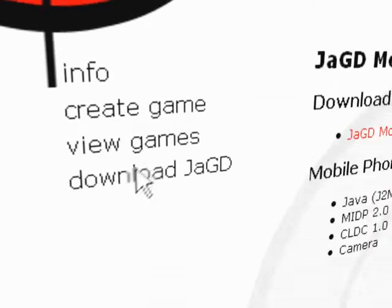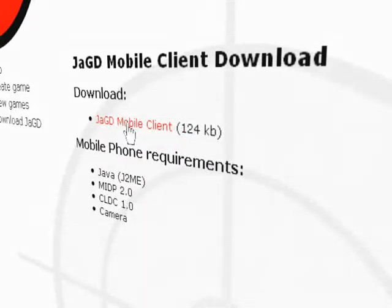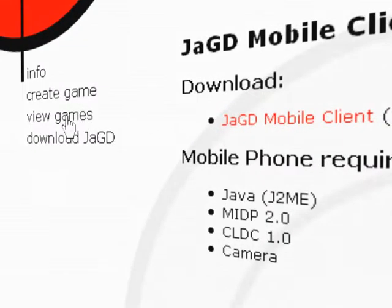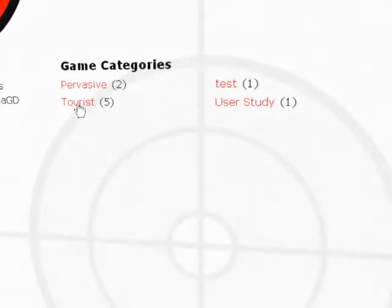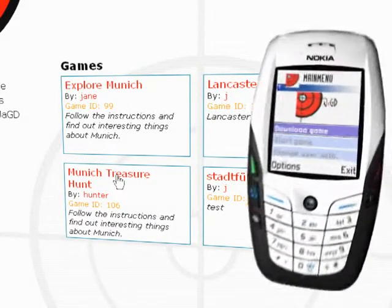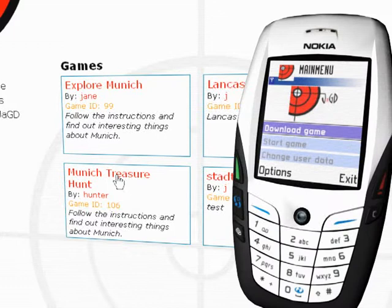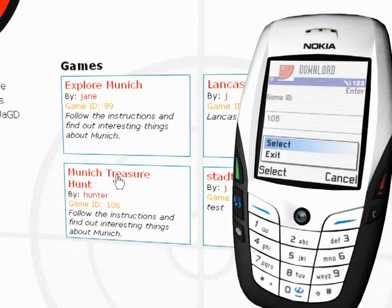For the mobile phone, a stand-alone application is implemented as a Java MIDlet. The MIDlet is the platform that downloads a game description over HTTP and then runs the game. During the game, the user can be offline.